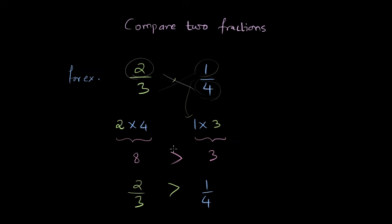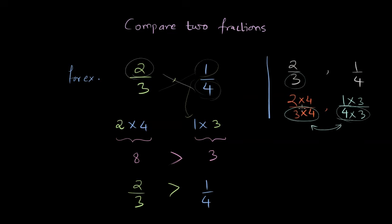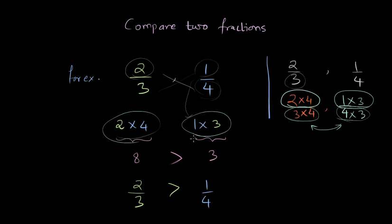This method works because when we compare two fractions, we want to make the denominators equal. On the right hand side, I'll show you how this works. When comparing 2/3 and 1/4, we multiply the numerator and denominator of the first fraction by the denominator of the other, giving 2 times 4 over 3 times 4. We do the same for the second fraction using the first fraction's denominator. The denominators become equal, so we are simply comparing the numerators — that's why this method works.